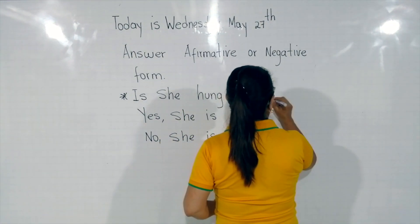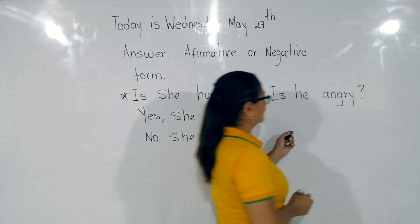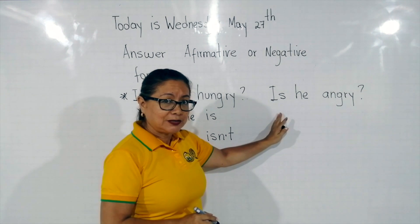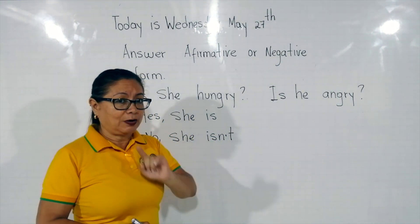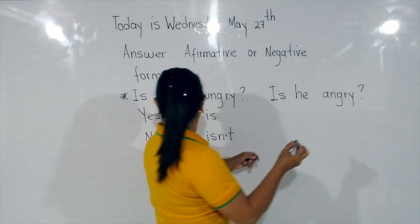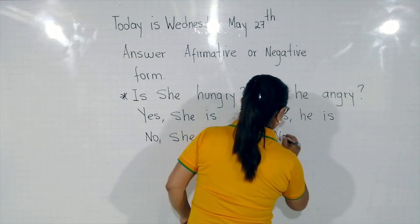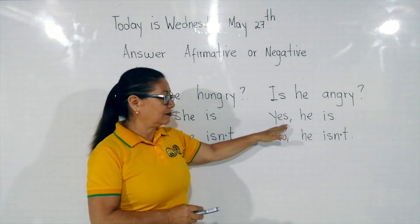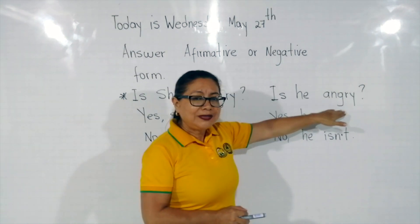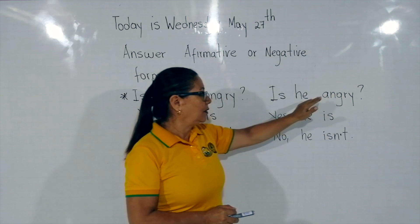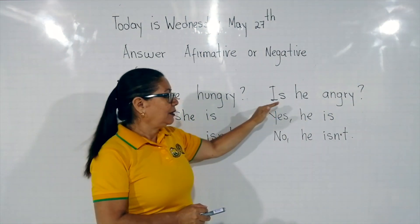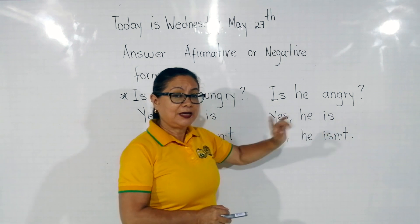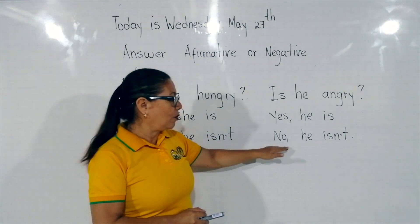Other example. 'Is he angry?' Observemos — también es una pregunta. Here is a question. Tenemos dos opciones: afirmativo o negativo. 'Is he angry?' — ¿Está él enojado? Jump, jump, jump around. Yes, he is. No, he isn't. Angry significa enojado. He — él. Yes, he is — sí, sí está. No, he isn't — no, no lo está.